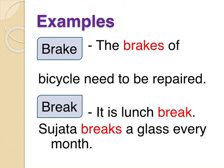And the other meaning of B-R-E-A-K — 'Sujata breaks a glass every month' — woh tootna — jo glass toot jaata hai ya pencil toot jaati hai — that is also 'break'. So B-R-E-A-K has two meanings: taking a short time off, and something breaking. But B-R-A-K-E means the brake we apply on vehicles — cycle mein brake lagate hain. It has a different spelling, different meaning, but the pronunciation is the same.